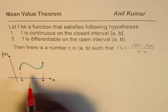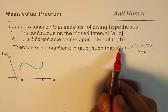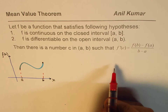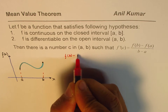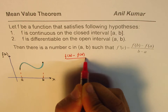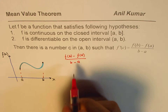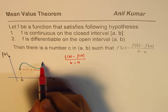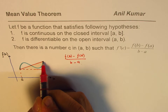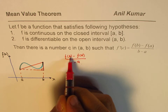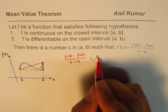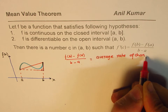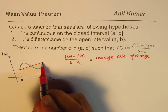Then there is a number c somewhere in between such that f'(c) equals f(b) minus f(a) divided by b minus a. Now, what is f(b) minus f(a) divided by b minus a? If we consider these two points, f(b) minus f(a) over b minus a represents the average rate of change between these two points.